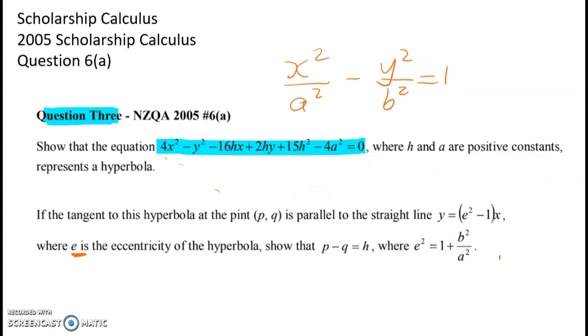Hopefully you can spot that the main technique we're going to be using is completing the square. We're going to separate the x stuff, separate the y stuff and go from there. Once we've done that then we're asked to do something with the tangent to this hyperbola, so that is where you should be thinking implicit differentiation. If the tangent to the hyperbola at the point pq is parallel to this straight line, then we have to show that p minus q is equal to the h from up here. So p and q are these coordinates.